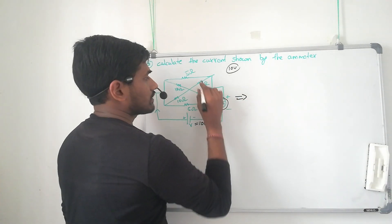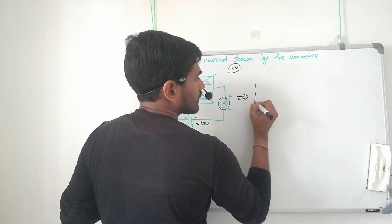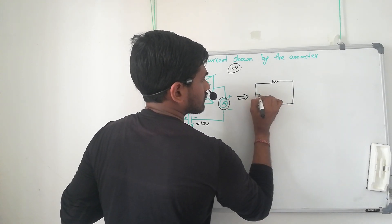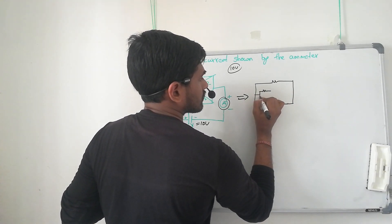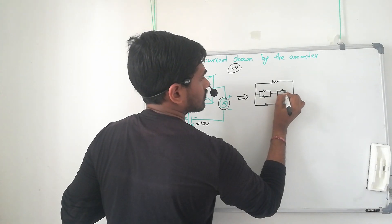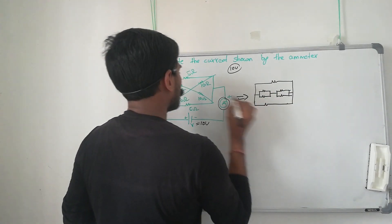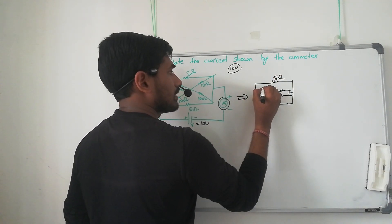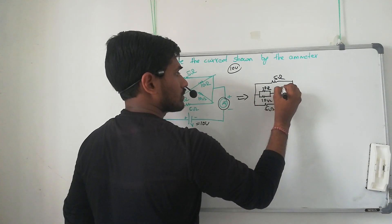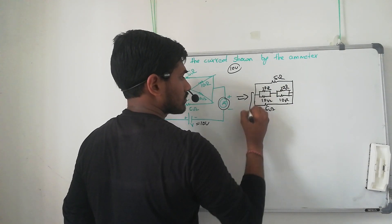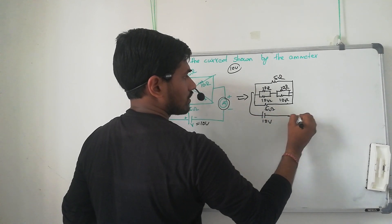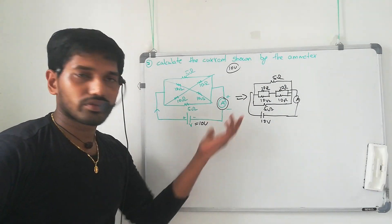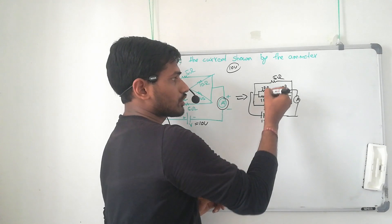I will use one shortcut method. Just redraw the diagram like this: these two are in parallel, and these two are also in parallel. Once you draw the diagram this way, it will become easy for you.